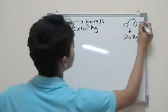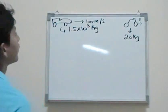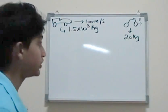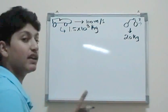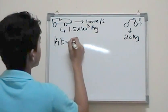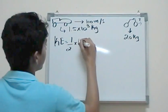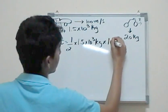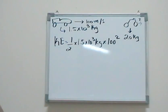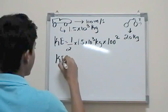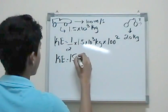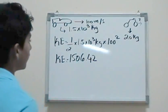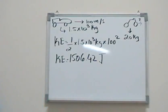How fast should it move? We don't know the speed. To have the same kinetic energy. The key here is same kinetic energy. So the kinetic energy of this would be easy to find because KE equals half M, which is 1.5 times 10 raised to 3 kg, times 100 squared. You would find that the KE kinetic energy would equal to 1,506.42 joules.